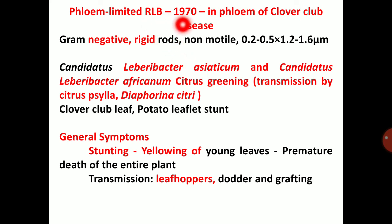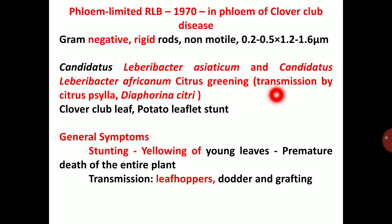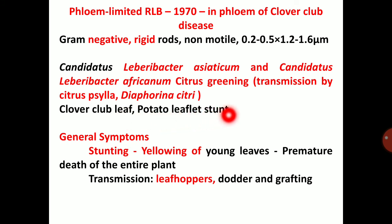Phloem-limited RLB — first reported in 1970 in phloem of clover club disease. Gram-negative rigid rods, non-motile, 0.2-0.5 by 1.2-1.6 micrometers. Candidatus Liberibacter asiaticum and Candidatus Liberibacter africanum cause citrus greening disease. Transmission by Diaphorina citri. Other diseases: clover club leaf, potato leaflet stunt. These are some of the diseases caused by phloem-limited bacteria.